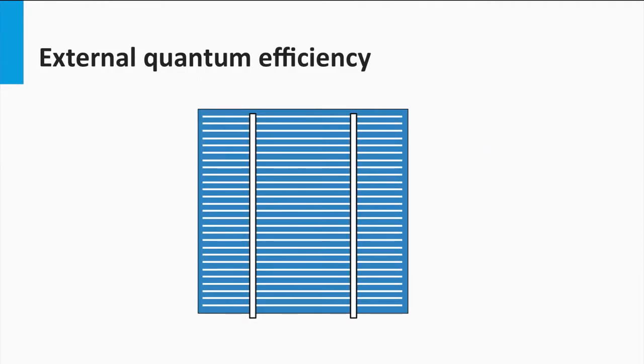An important conclusion of this simple exercise is that the choice of semiconductor material determines the open circuit voltage and the short circuit current density through its band gap. Now we are going to look in more detail how spectral utilization of a solar cell can be determined and measured.